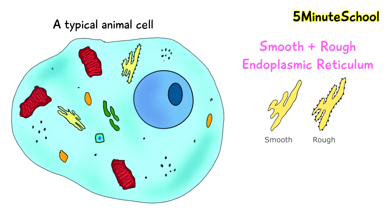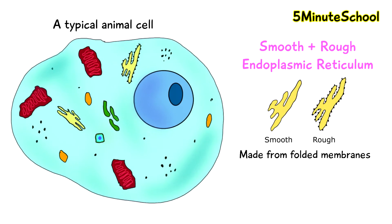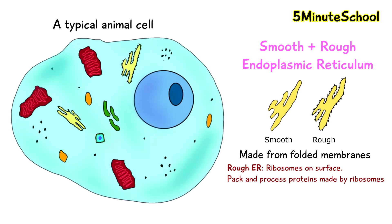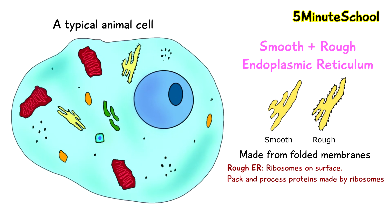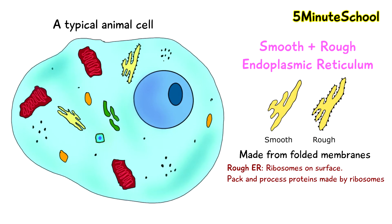The smooth and rough endoplasmic reticulum are these structures here. They are both structures made from folded membranes and are the same, except the rough endoplasmic reticulum has ribosomes dotted around it — you can see them as the black dots covering the structure. The rough endoplasmic reticulum is responsible for packing and processing proteins made by the ribosomes. The ribosomes make the proteins and then bind onto the rough endoplasmic reticulum to process the protein they have made.